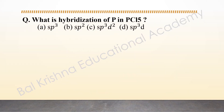The next question is: what is the hybridization of phosphorus in PCl₅? The options are sp³, sp², sp³d², and sp³d. As we know, the structure of PCl₅ has trigonal bipyramidal (TBP) geometry, and for TBP geometry, the hybridization of PCl₅ should be sp³d.